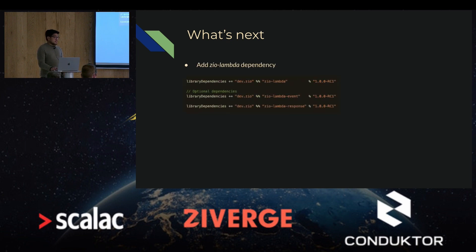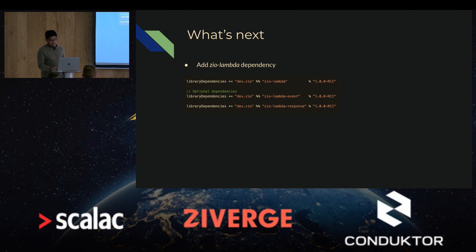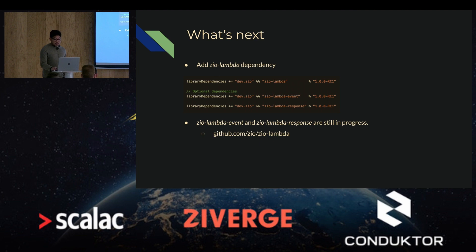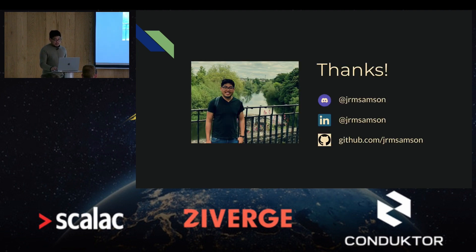If you want to give ZIO Lambda a try, you can just add it to your list of dependencies. ZIO Lambda also offers two extra dependencies: ZIO Lambda event, which has the most common AWS events, and ZIO Lambda response, which is the same thing but for responses. Note that ZIO Lambda event and ZIO Lambda response are still in progress, so any contributions are welcome. If you have any questions about ZIO Lambda, feel free to reach out to me on the ZIO Discord server, on LinkedIn, or at tonight's dinner. Thank you very much.